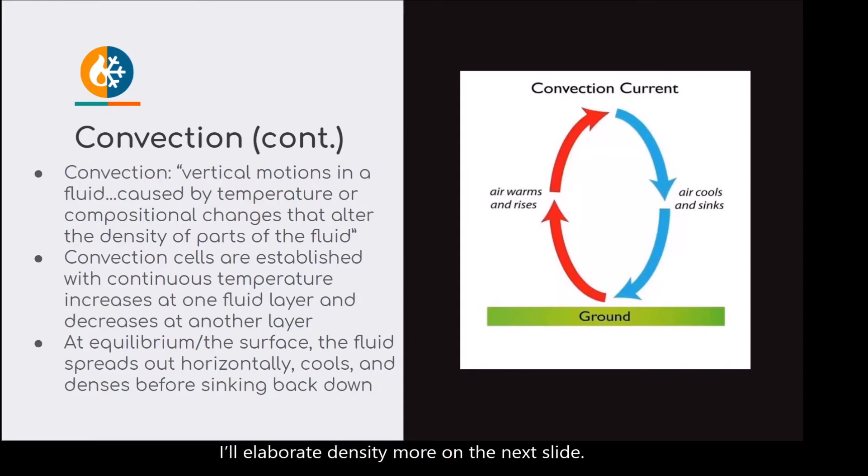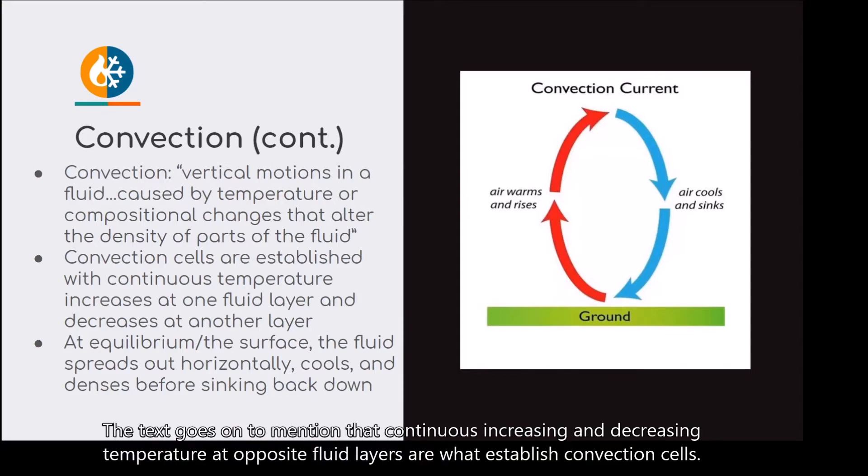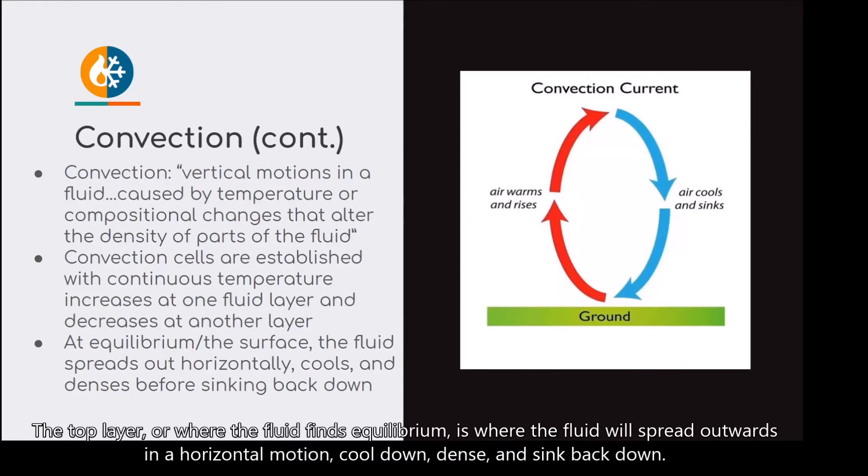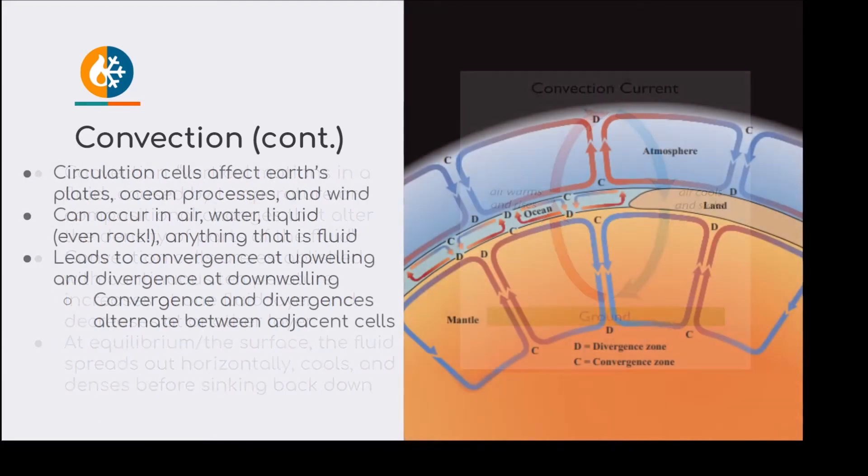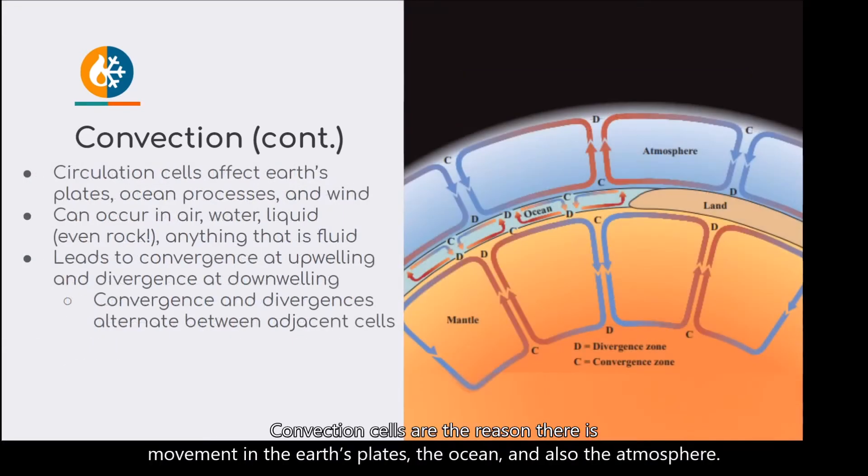I'll elaborate density more on the next slide. The text goes on to mention that continuous increasing and decreasing temperature at opposite fluid layers are what establish convection cells. The top layer, or where the fluid finds equilibrium, is where the fluid will spread outwards in a horizontal motion, cool down, dense, and sink back down. This completes the circulation cell cycle. Convection cells are the reason there is movement in the Earth's plates, the ocean, and also the atmosphere.